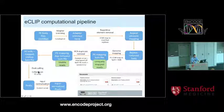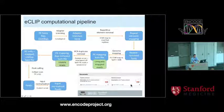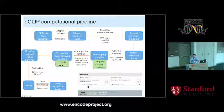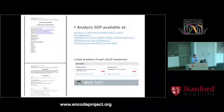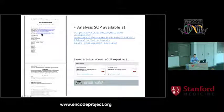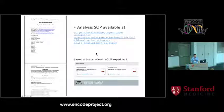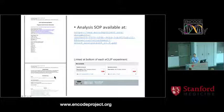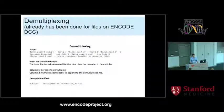One other useful thing: on every CLIP experiment at the bottom there are two documents - an assay SOP and an analysis SOP that goes through all processing steps. All scripts we use are available on GitHub, so you can download and use them. This is the static link at the ENCODE project, and it's also published as part of a recent paper. I'm going to quickly skim through all the steps, hitting the high notes of what's important.